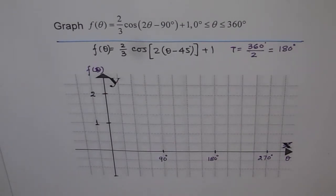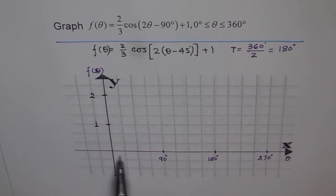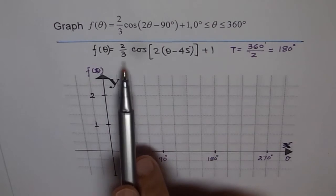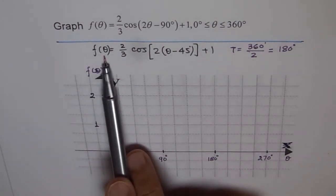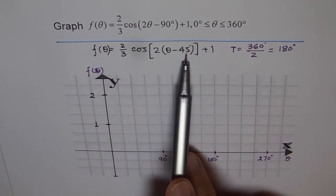That gives you the starting point of all the things. Now let's try to understand how to sketch our graph. Let's go back to the function: f of theta equals 2 over 3 cos of 2 times theta minus 45 plus 1.